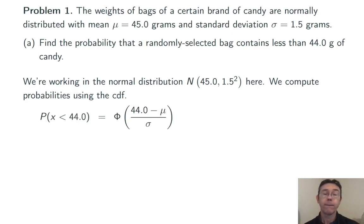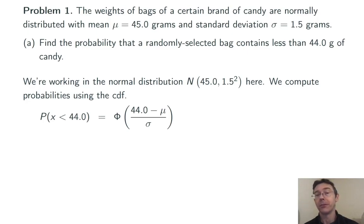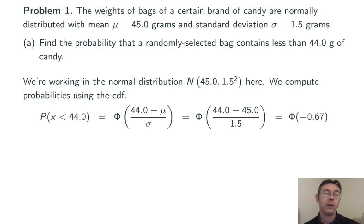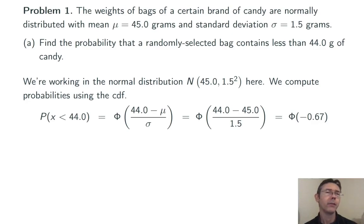We're going to get the z-score for a bag that has a weight of 44 grams, and that z-score is going to be 44 minus mu over sigma. Here of course mu is 45 and sigma is 1.5, for a z-score of negative 0.67. We want to get the probability of finding a z-score at random less than negative 0.67, which is the same as the probability of getting an x value less than 44 in the original distribution.